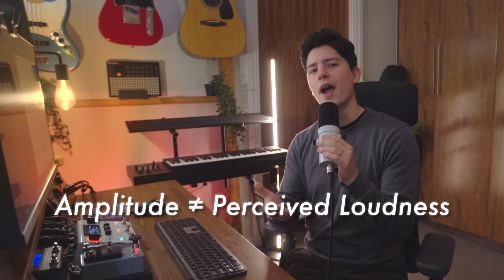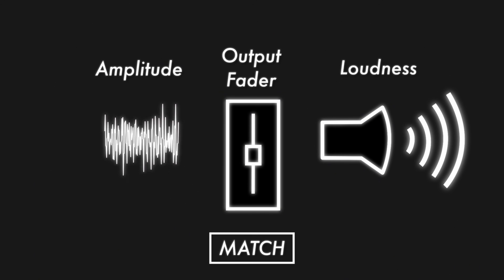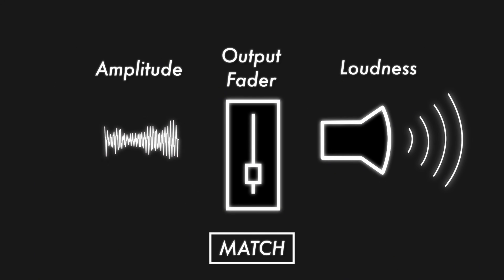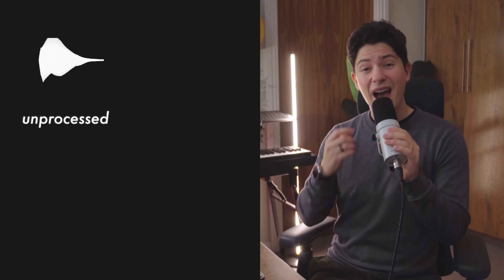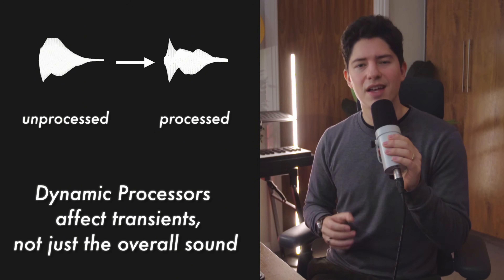Dynamic processors are the unsung heroes of music production. They respond to the amplitude of a signal — that's the actual size of the waveform — and not just how loud or quiet something feels. This distinction is important, because while amplitude is often linked to perceived loudness, if we zoom in, dynamic processors can actually reshape the waveform itself and even change its timbre.